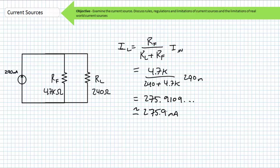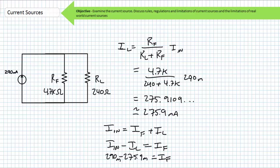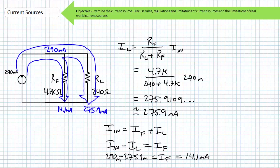Knowing 275.9 milliamps of the incoming 290 milliamps went through the adjustable load resistor RL, we can use Kirchhoff's current law to solve for current through the fixed resistor IF, being the remainder. Where IN equals IF plus IL, solving for IF and substituting in the necessary values, we find IF to be approximately 14.1 milliamps. Less current is going through the larger fixed resistor, more current is going through the smaller variable resistor. The summation of both outgoing currents equals the incoming current, so we can be reasonably certain our results are correct.